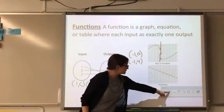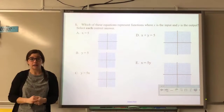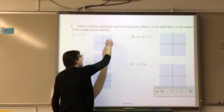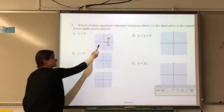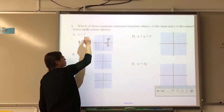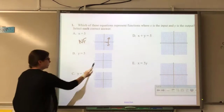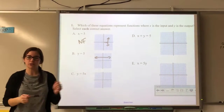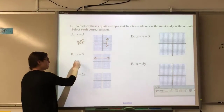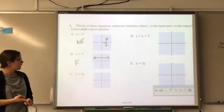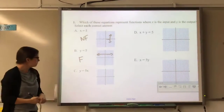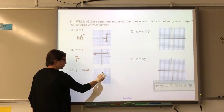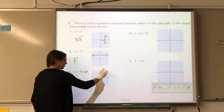Let's look at specific examples. x equals 5 graphed as a vertical line does not pass the vertical line test — not a function. y equals 5 is a horizontal line — it passes the vertical line test and is a function (zero slope, this is the 'skier saying zero fun' line). y equals 5x has a y-intercept of 0, slope of 5, passes the vertical line test — it's a function.